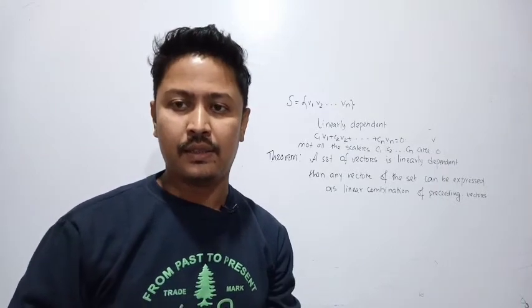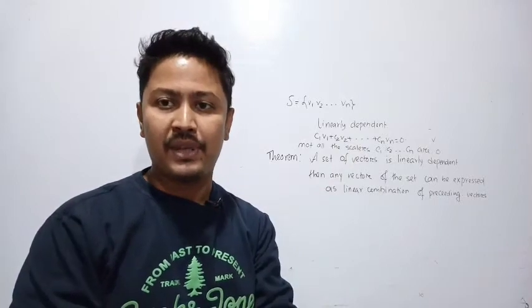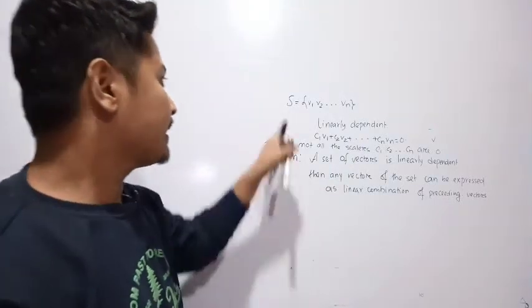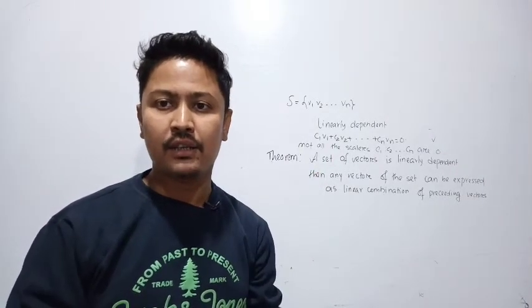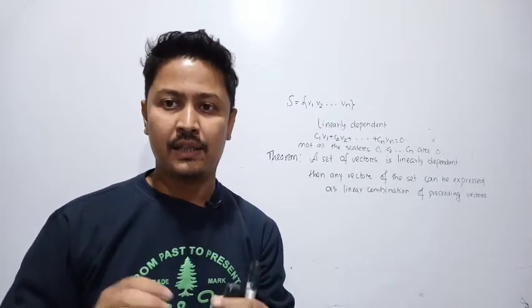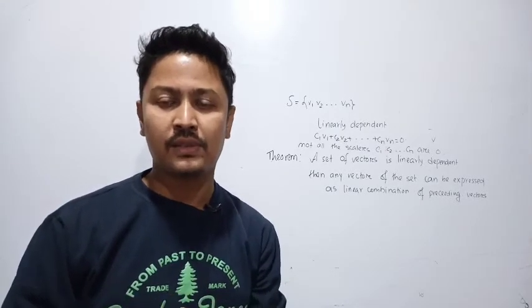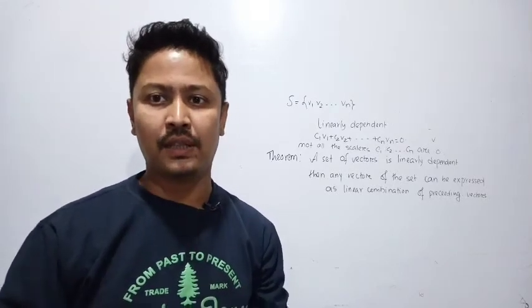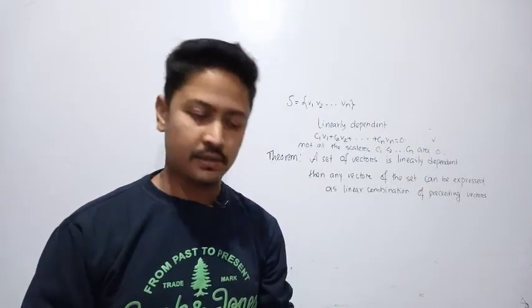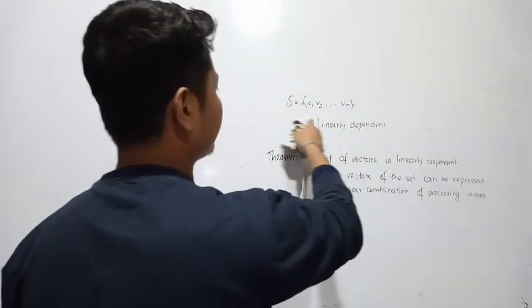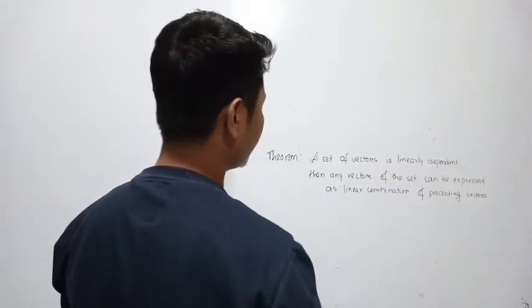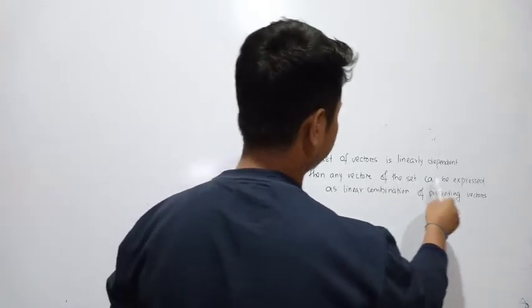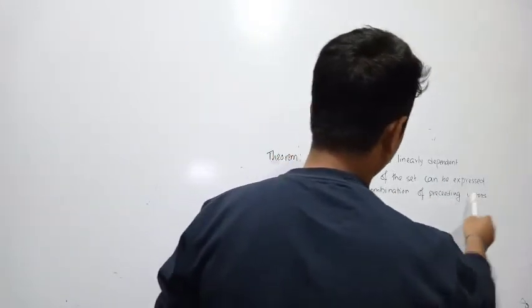That means there exists at least one scalar which is non-zero. So when we have a linear combination equal to zero, we need at least one scalar to be non-zero. This is the definition of a linearly dependent set. The theorem states that if the set of vectors is linearly dependent, then any vector of the set can be expressed as a linear combination of the preceding vectors.